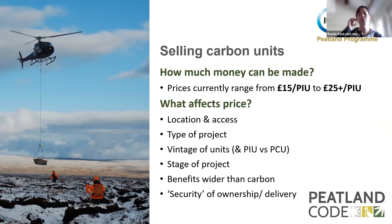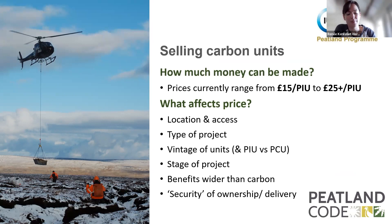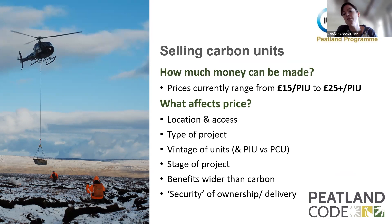Just very briefly on how you actually get this private financing — it's mainly by selling carbon units, though there is also an investor pathway which we won't touch on today but can discuss if you have questions. Current prices for PAUs — Pending Issuance Units — are about between 15 and 25 pounds. We're also working on a price index for the UK carbon markets, so that will be a lot more visible hopefully in the near future.